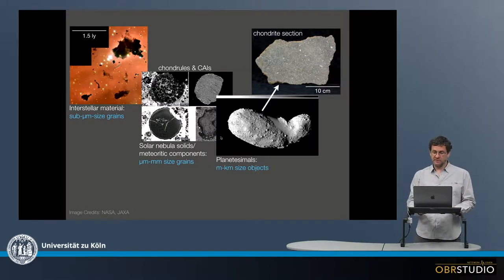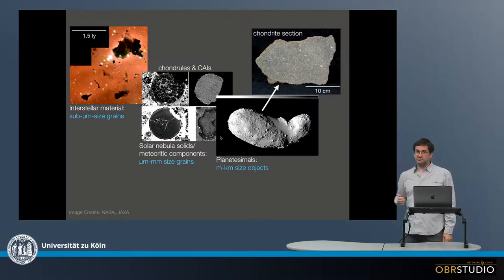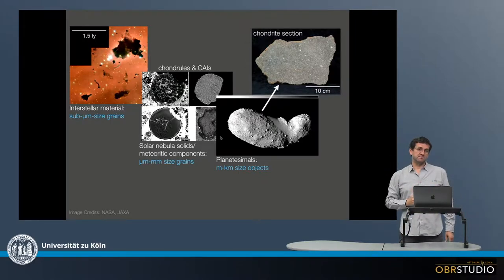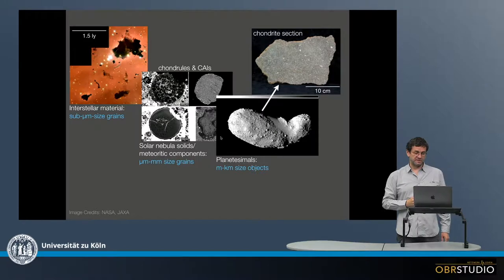So this is from a planetesimal. And these planetesimals are then a meter to kilometers in size. And this is the second growth step. Again, this still happened more or less in the protoplanetary disk.